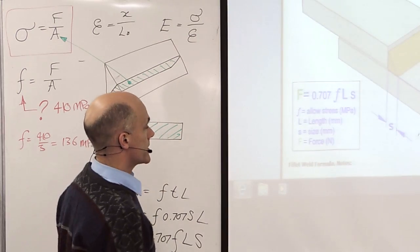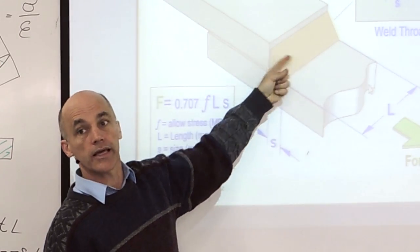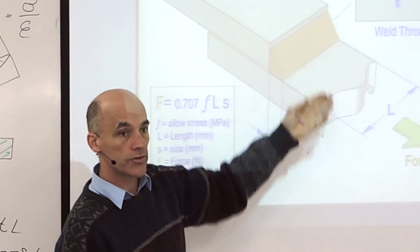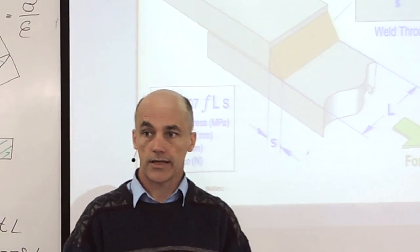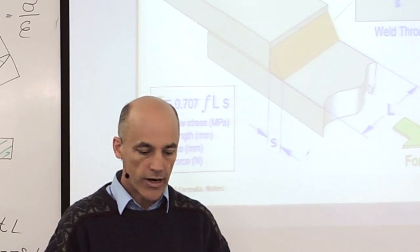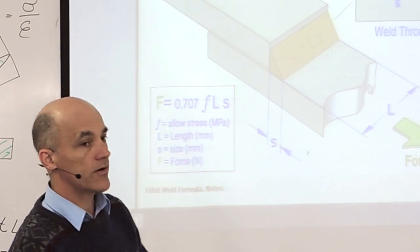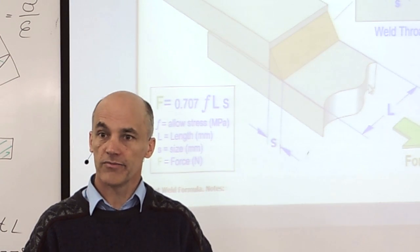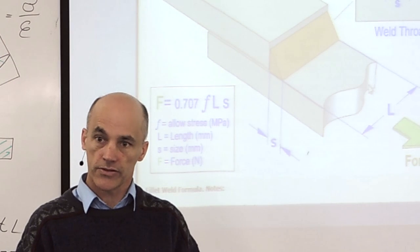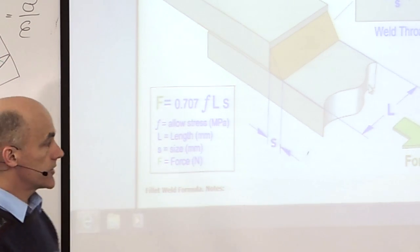Most of the time when you're doing a question, you're going to be asked either for the size of the weld or the length of the weld. So it might say it's an 8mm weld. Find out how long it should be. Or it might say this is the length of the weld. Find out the size that you need to do. In practice, we're not going to specify a weld of 4.35mm. Because no welder can sit there and make sure it's exactly 4.35. They'll just round it off to some standard numbers which they use.